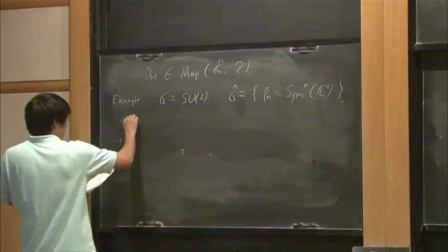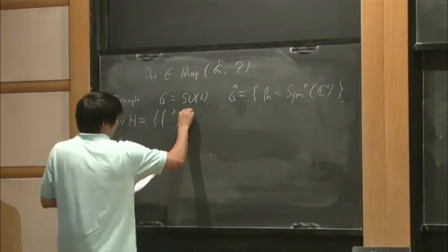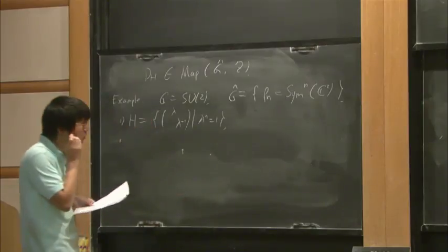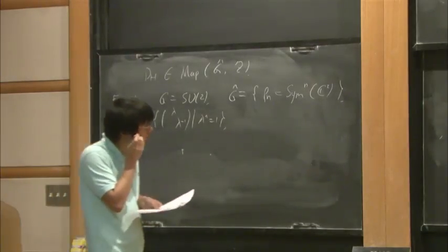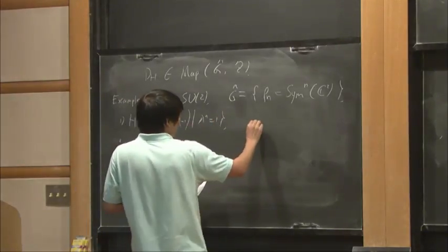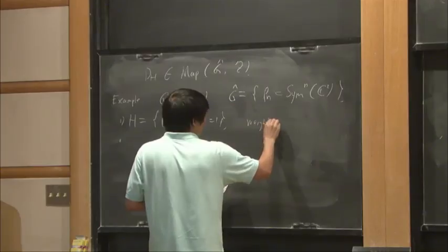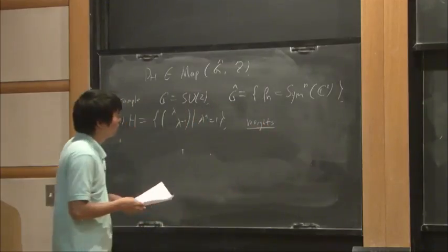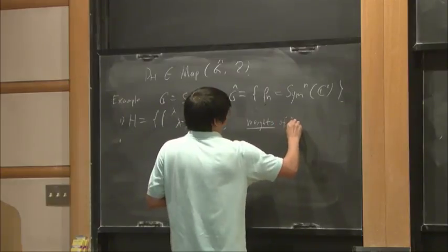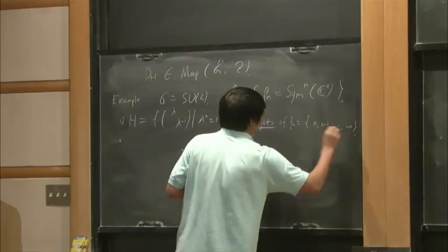So first, we look at the cyclic subgroup of order N. So what are the invariant dimensions? We load the weight space, we load the set of weights. And we get N, N minus 2, to minus N.